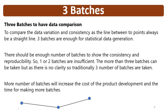Another reason found in the literature is to compare data variation and consistency. The line between two points is always a straight line, so three batches are enough for statistical data generation and the data will be statistically significant. If you take one batch and correlate parameters with a second batch, there will be a straight-line relation. Adding a third batch gives you a range for the parameters, which is why enough batches are needed to show consistency and reproducibility — one or two batches are not sufficient.